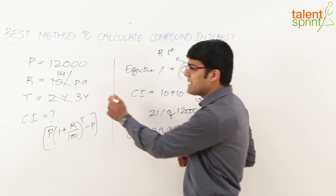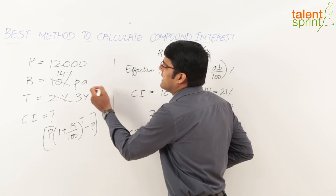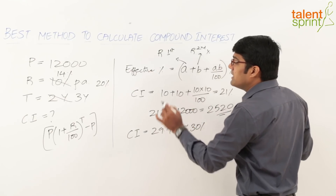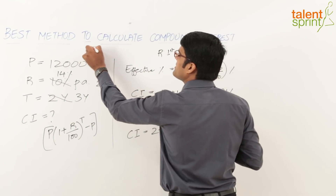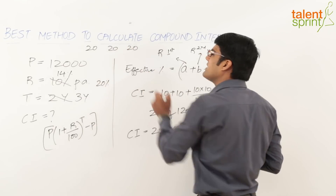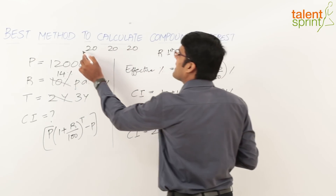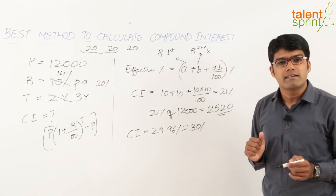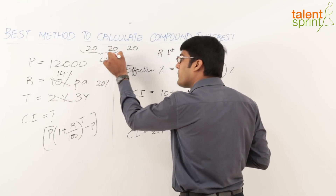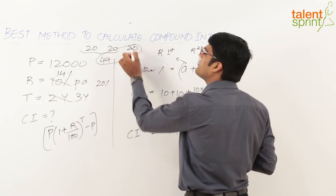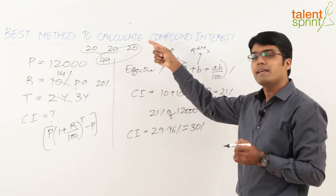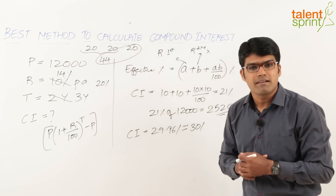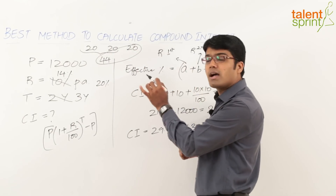We have 20% for year one, 20% for year two, and 20% for year three. First, apply the effective percentage formula for the first two years: 20 + 20 + (20×20)/100 = 44%. Now take this 44% and apply the formula again with the third year's 20%: 44 + 20 + (44×20)/100.